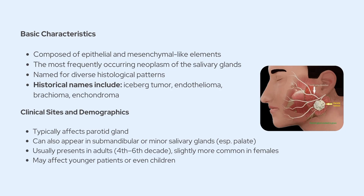Over the years, it's also been referred to by a number of other names, like iceberg tumor, endothelioma, brachioma, and even enchondroma, which just reflects how varied its morphology can be.